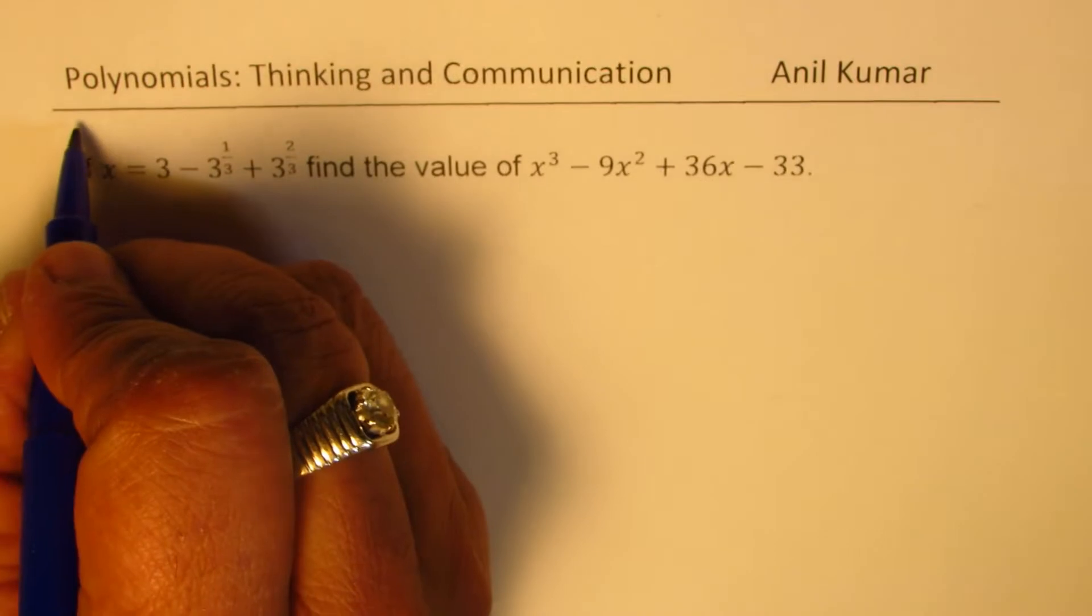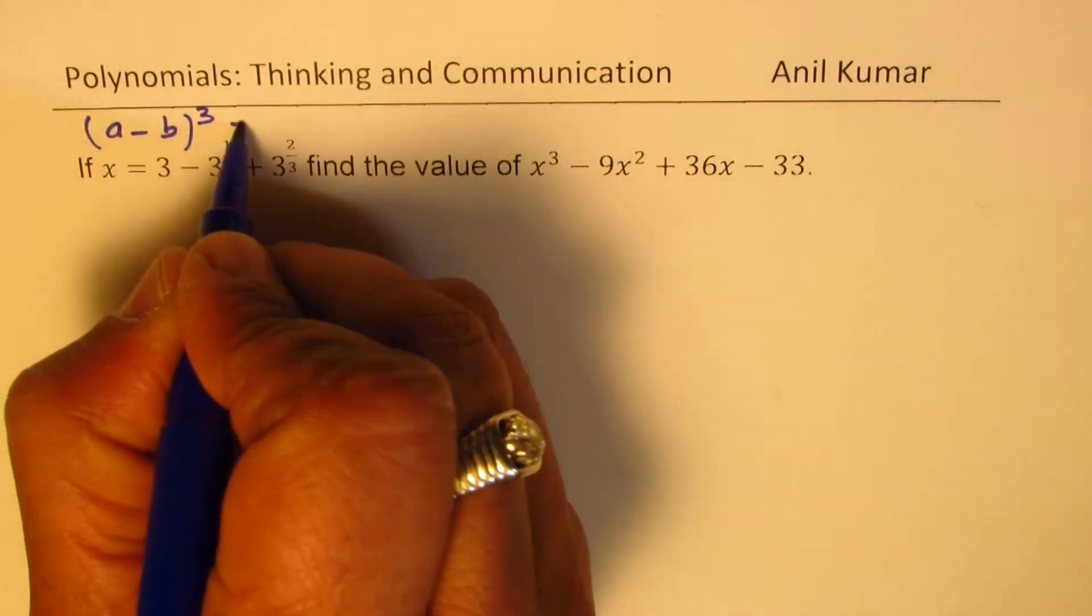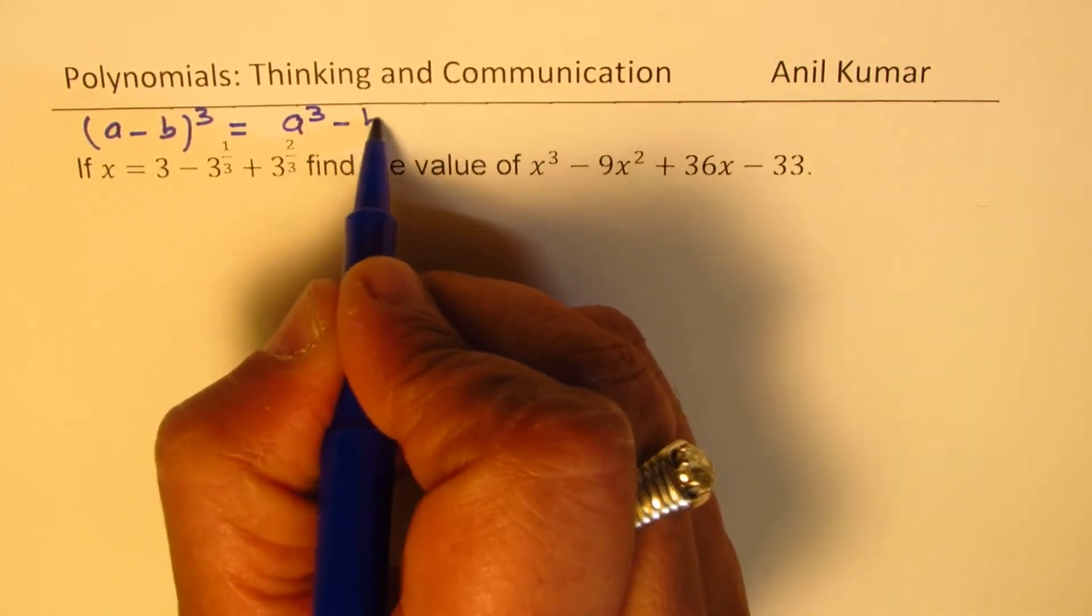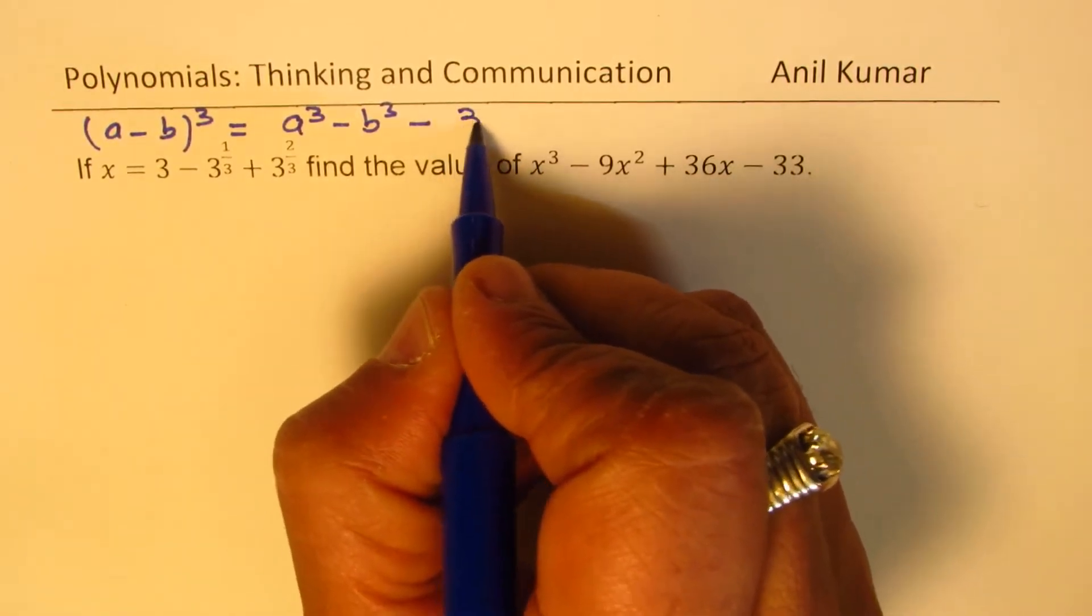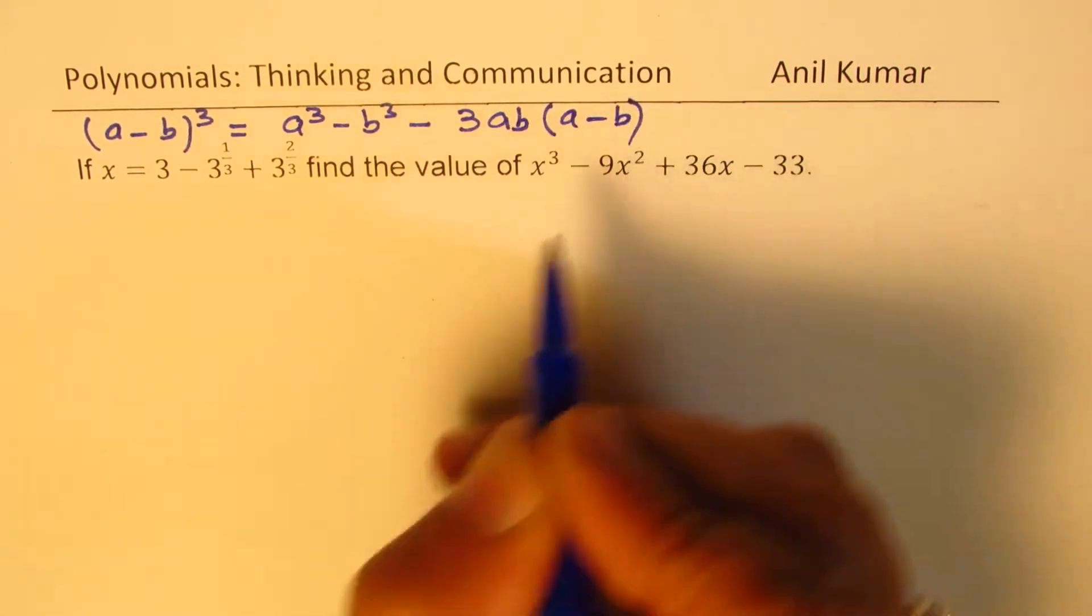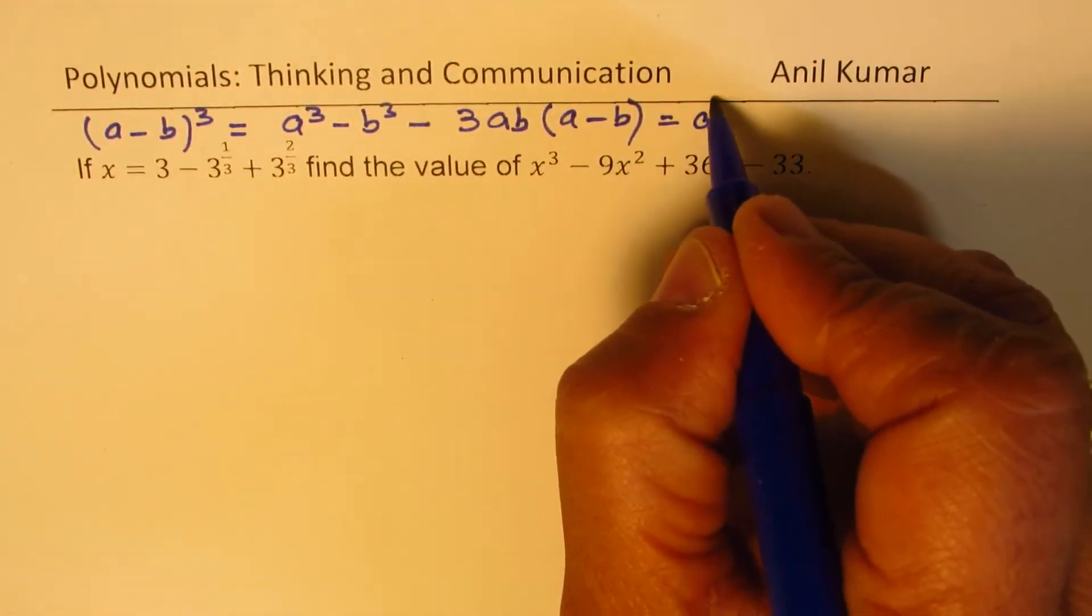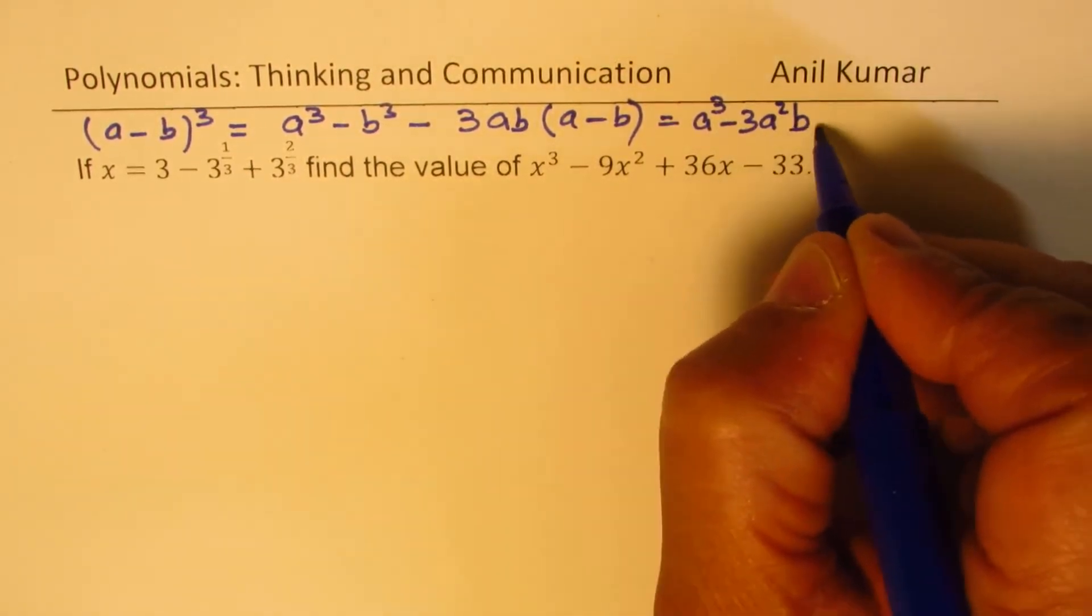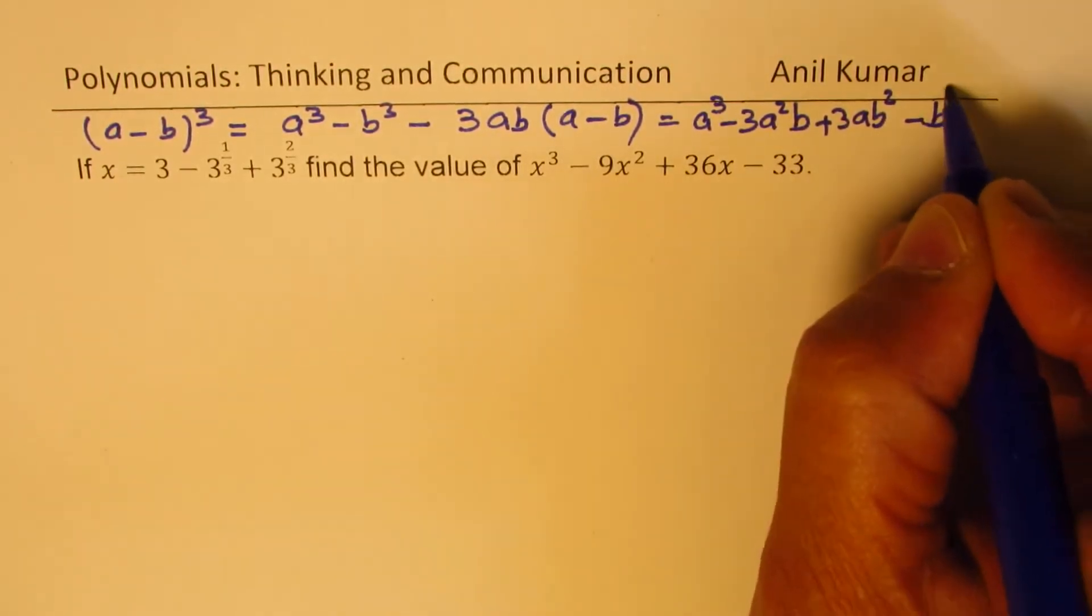So what you need to know here is what is a minus b whole cube equals to, which is a cube minus b cube minus 3ab times a minus b. So you can also write this as, generally we write a cube minus 3a squared b plus 3ab squared minus b cubed.